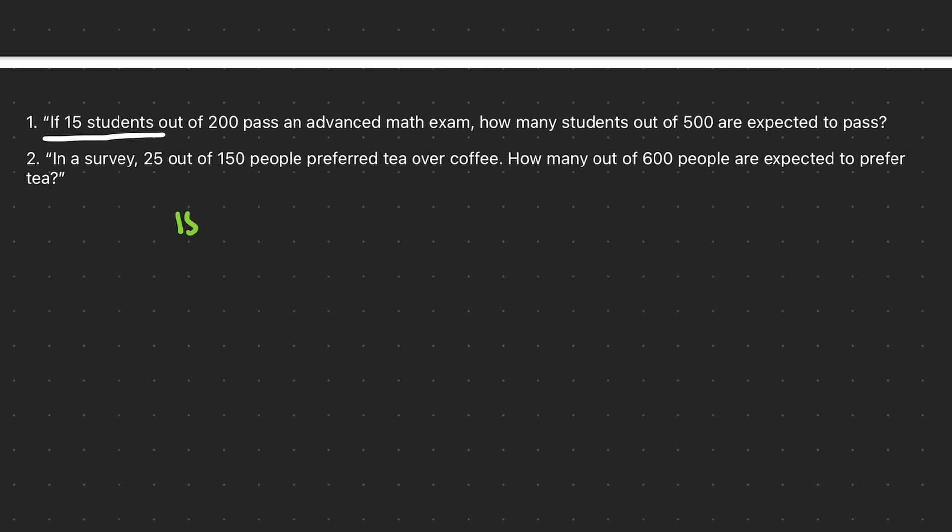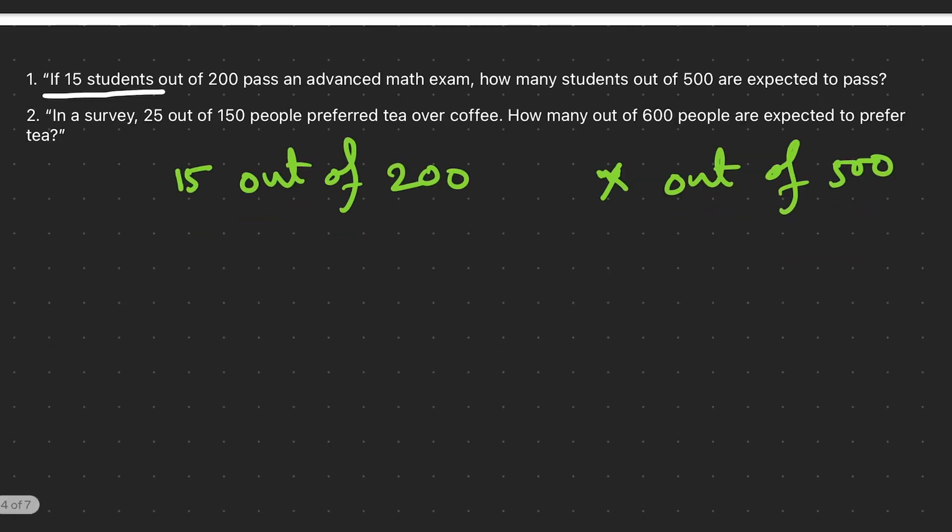This is our question. Now let's solve it. To solve this problem, we can write a proportion: 15 students pass out of 200. How many students out of 500 are expected to pass? We don't know. Let's say it's x students who are expected to pass out of 500. There is a relationship because all the data comes from a single school or facility, therefore we can write this as equal, so this becomes a proportion.